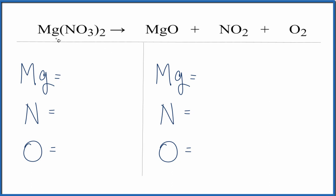On the reactant side we have one magnesium. The subscript two applies to everything, so two times the one nitrogen — I have two of those. Two times the three oxygens gives six oxygens. Now let's come over to the product side.